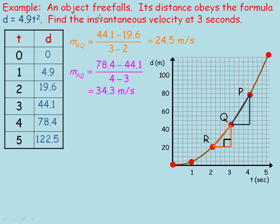One example: we have an object free falling, and its distance obeys the formula d = 4.9t². In a previous note, we generated a table by putting times from 0 to 5 in place of T, giving the distances. We're trying to find the instantaneous velocity at 3 seconds. Previously we found the average rate of change from 2 to 3 seconds: (44.1 − 19.6) / 1 = 24.5 meters per second, which is the slope of this secant.